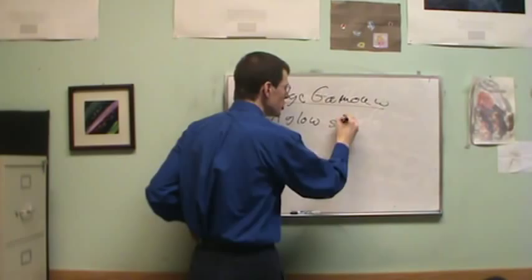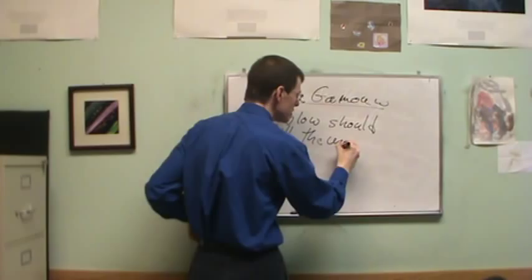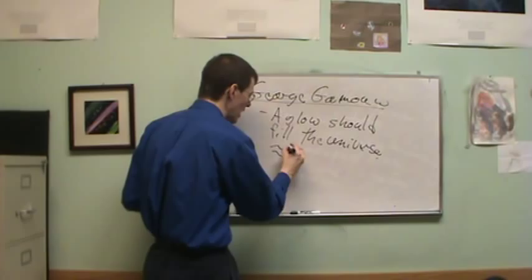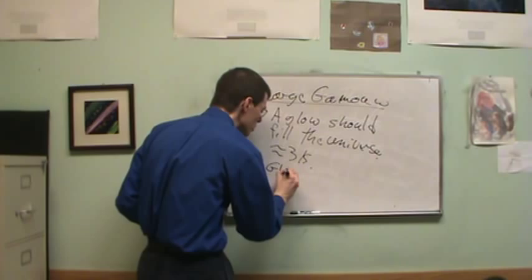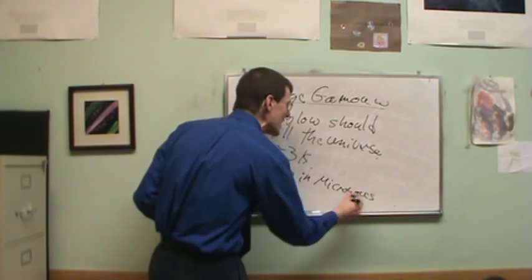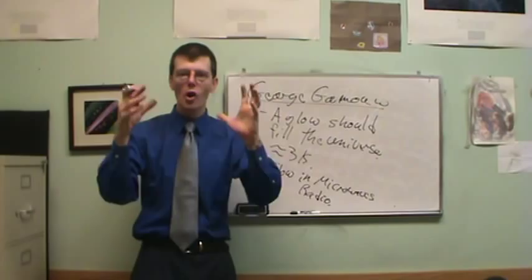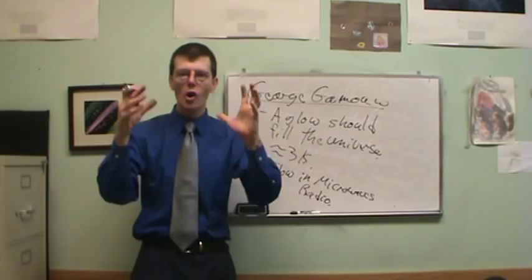A glow from the Big Bang should fill the universe. The initial calculations are kind of rough. Then they get more and more specific. Somewhere around three kelvins. Really super, super cold. This would put a glow. The glow should be in the microwaves. Microwaves, down in the radio kind of part of the EM spectrum. Radio part of the electromagnetic spectrum. There should be a glow which should still, if the Big Bang is right, a specific testable prediction. If the Big Bang is right, there should be a glow filling the whole sky with microwaves.